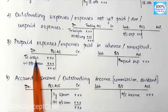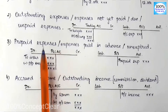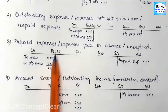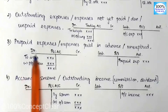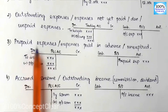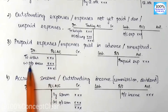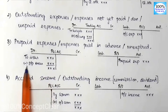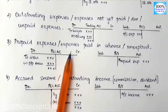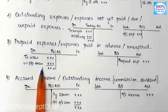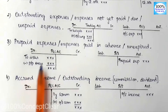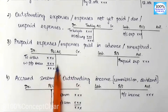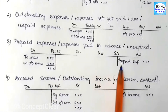For prepaid expenses, we will deduct the prepaid amount from the P&L account on the debit side, because it is an expense. For example, if insurance is in the trial balance, we will minus the prepaid insurance from the insurance amount in the P&L account. We minus the prepaid expenses because we are carrying that portion to next year. The prepaid expenses also appear on the balance sheet on the asset side, because next year we will get the benefit of that amount.